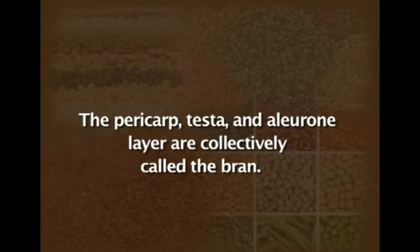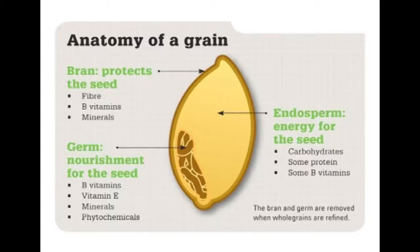The first layer is pericarp, underneath that is testa, and below that is the aleurone layer. These three layers together are called bran, and this bran is rich in fibre, B complex vitamins and lipids.